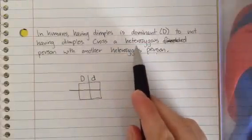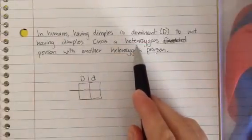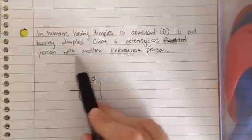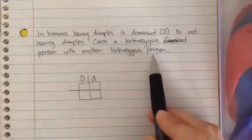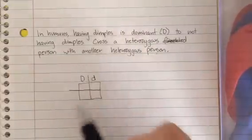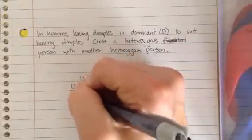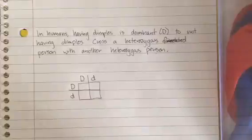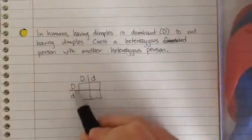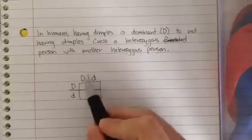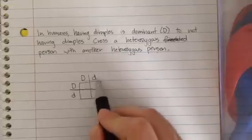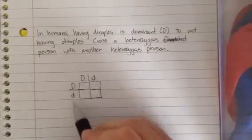Crossed with another heterozygous dimpled person. So hetero, different. We'd have big D, little d. Now, does it matter which individual goes on each of these axes? No, it does not matter. Just individual one goes here, two or two and one.